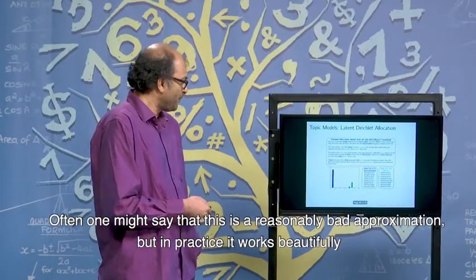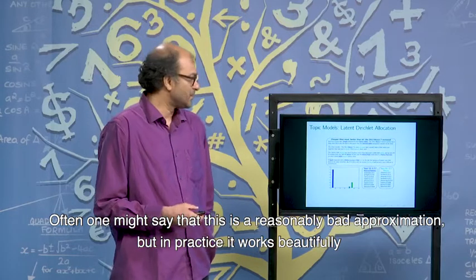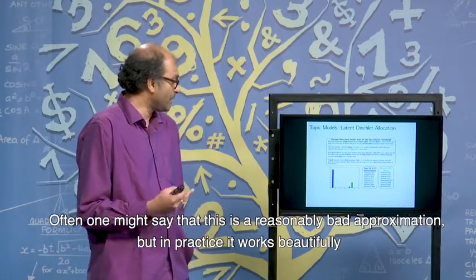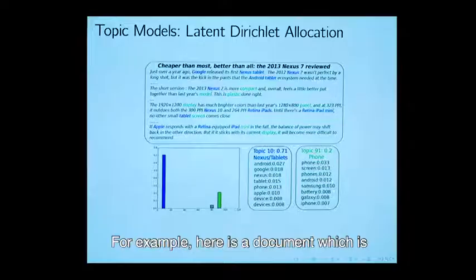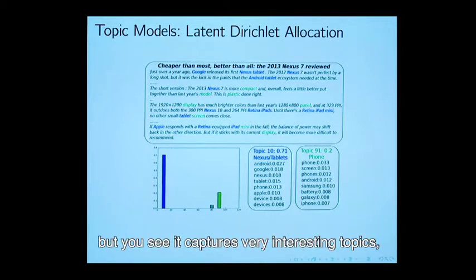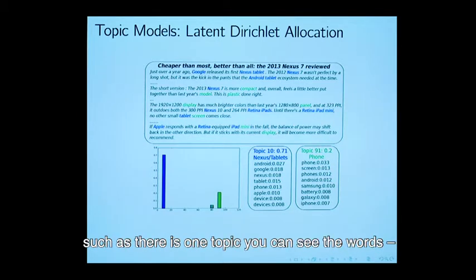Often one might say that this is a reasonably bad approximation, but in practice it works beautifully. For example, here is a document which talks about, which is something to do with I guess smartphones, but you see it captures very interesting topics such as this one topic you can see the word android, google, nexus, tablet, phone, which possibly means this topic related to nexus tablets.